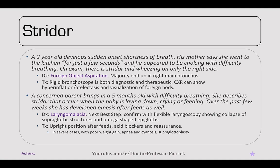A five-month-old has stridor that occurs when the baby is lying down, crying, or feeding, and has developed emesis after feeds. This is laryngomalacia. The next best step is flexible laryngoscopy, showing collapse of the supraglottic structures and an omega-shaped epiglottis. Treatment is upright positioning after feeds and acid blockers — parents can be reassured. In severe cases with poor weight gain, apnea, and cyanosis, supraglottoplasty is needed.